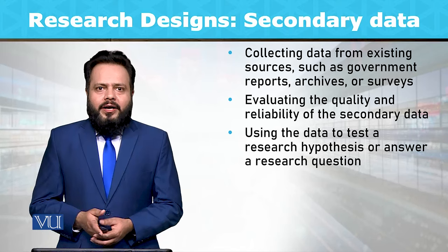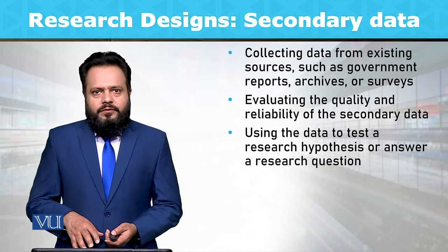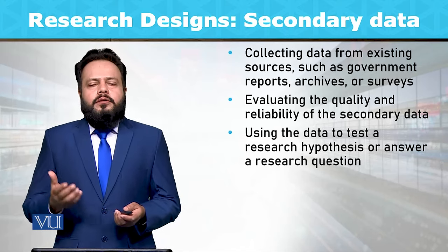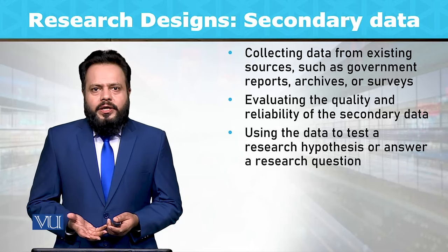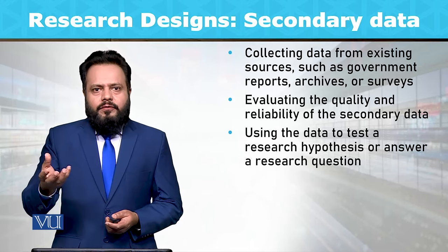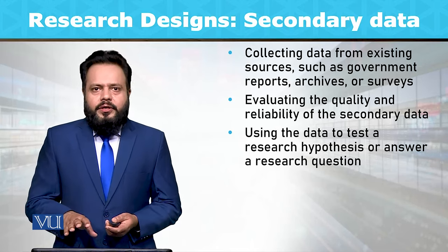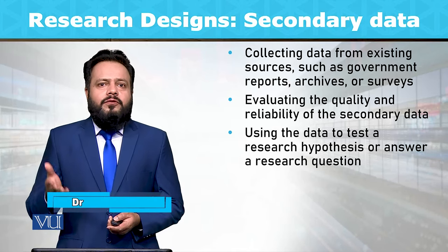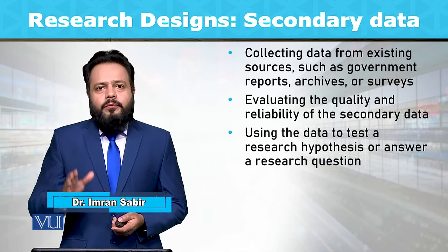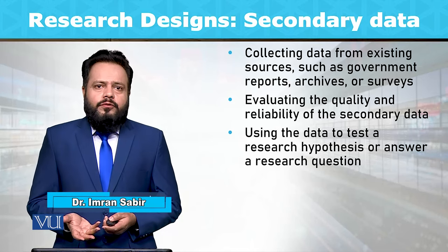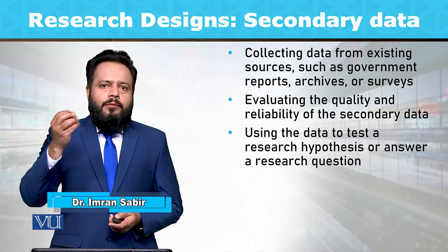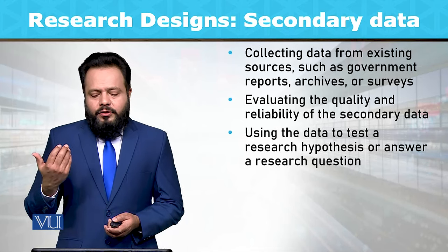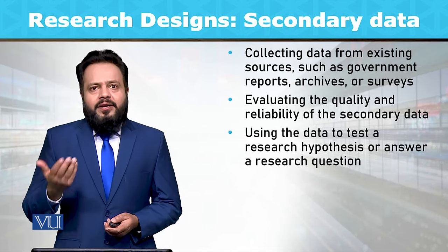In sociology, a social scientist or sociologist is not bound to use only primary data. Rather, secondary data — as long as the data is coming from reliable or credible sources — can be used. So evaluating the quality and reliability of secondary data is important.